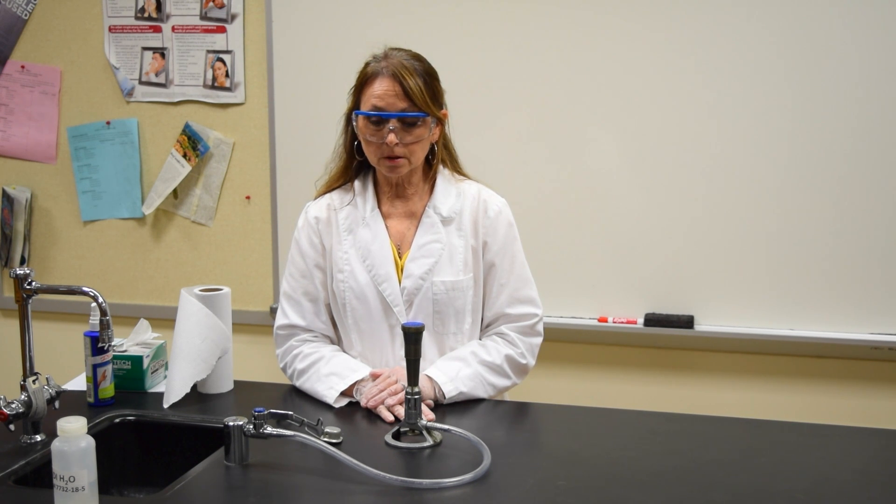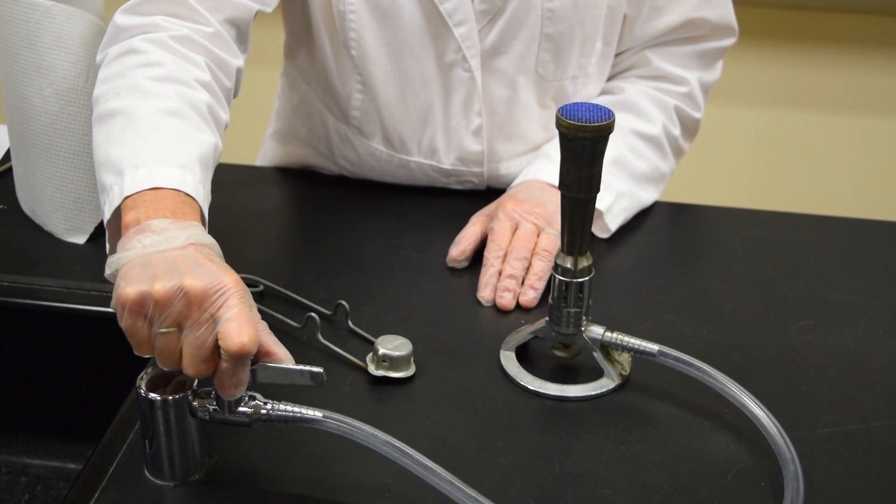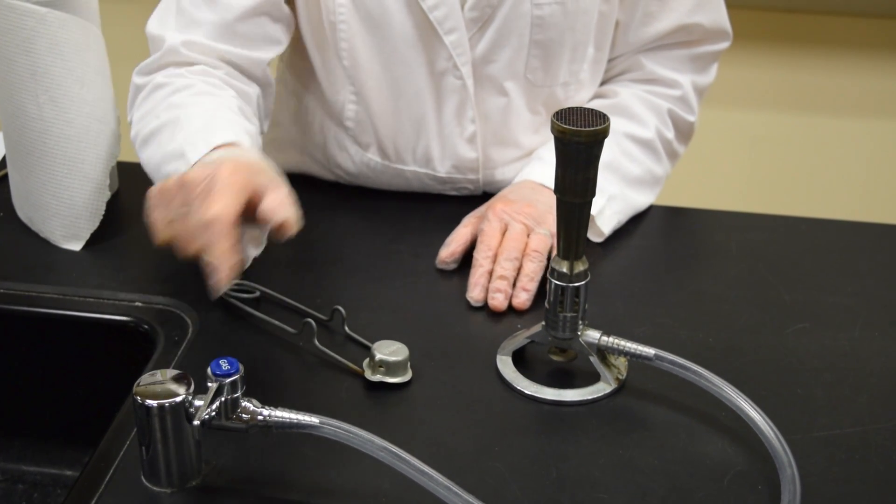To turn off your Bunsen burner, you take the handle and you move it so that it's running perpendicular to the nozzle of the gas.